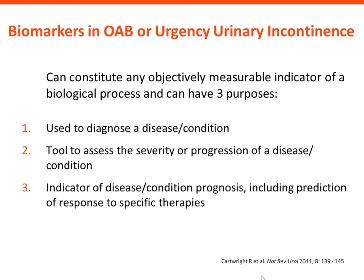In principle, we are talking about biomarkers. A biomarker can constitute any objectively measurable indicator of a biological process and can have three purposes. Number one, it can be used to diagnose a disease or condition. Number two, it's a tool to assess the severity or progression of a disease or condition. And number three, it's an indicator of a disease or condition prognosis, including prediction of response to specific treatments or therapies.